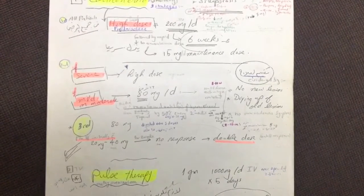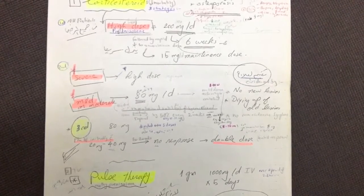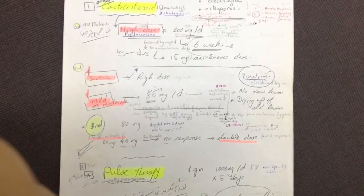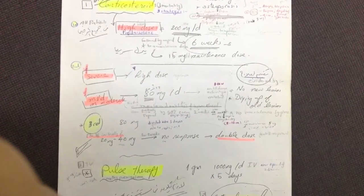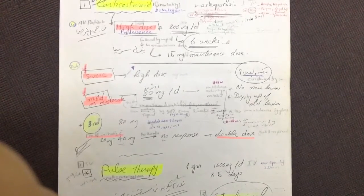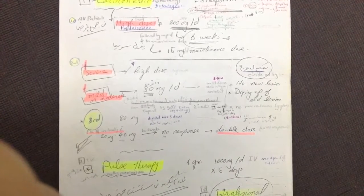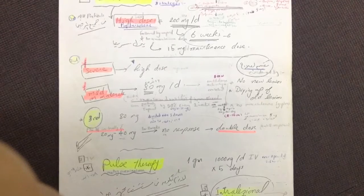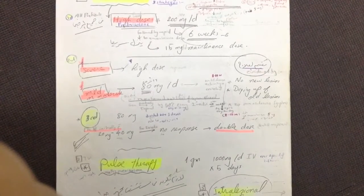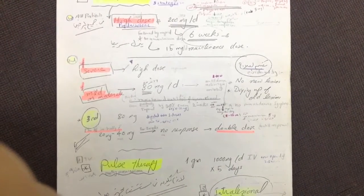The third regimen — considered the best — is to start the patient at 20 or 40 mg for two weeks; if there is no response, double the dose until response is achieved. In summary: the high-dose regimen uses 200 mg per day for six to eight weeks then rapid decrease to 15 mg maintenance. The second regimen starts at 80 mg for eight to ten weeks, decreasing to 40 mg for eight to ten months, then to 5 mg maintenance. The third starts at 20–40 mg and doubles if no response.